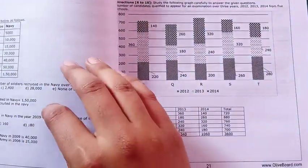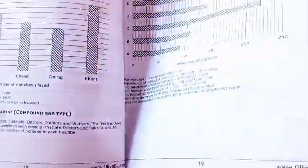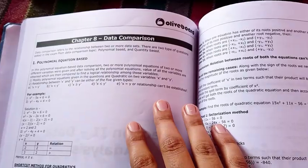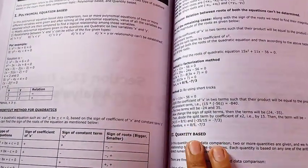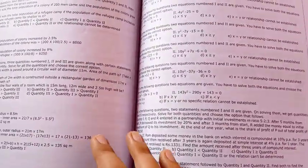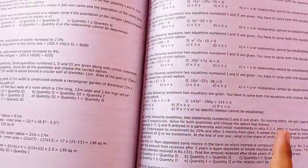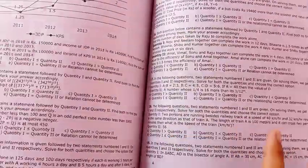And now we will move to the questions. This is the data comparison chapter which we see in the mains examinations frequently, quantity-based questions. And these types of questions are given. And after that they were saying data sufficiency.